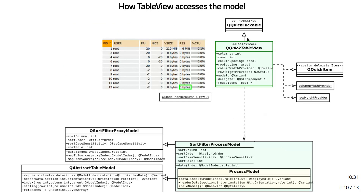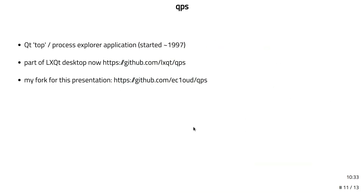The new TableView, on the other hand, is more like the widget TableView in that it will actually use the column and row in the model index, and the role goes back to being DisplayRole by default. So now your QAbstractTableModel will work. The code I based this presentation on is reused from a project called QPS — a really old application built for Linux desktops back in about 1997, and it's been maintained through the years. Nowadays it's part of the LX-Qt desktop, and I have a fork where I redeveloped the table model to use with the new TableView.